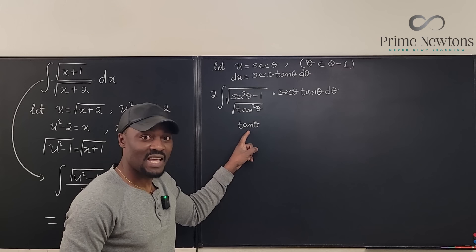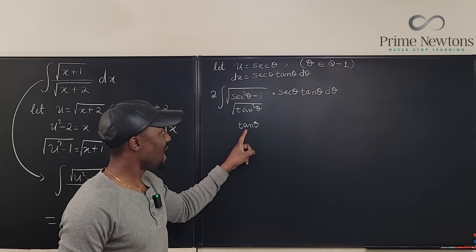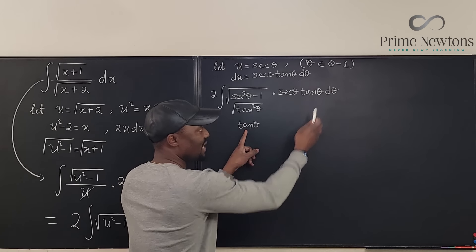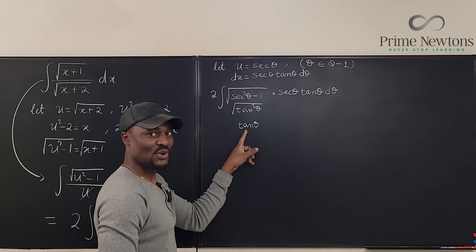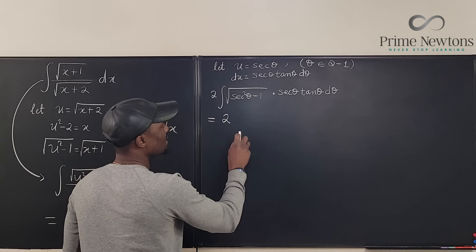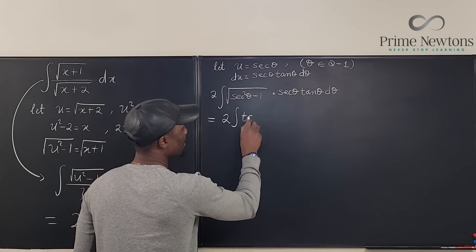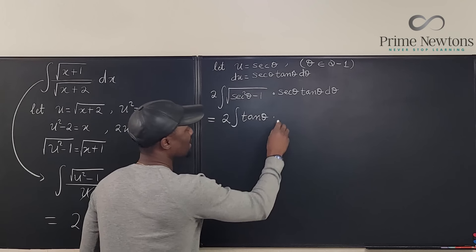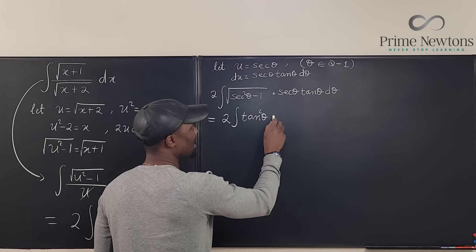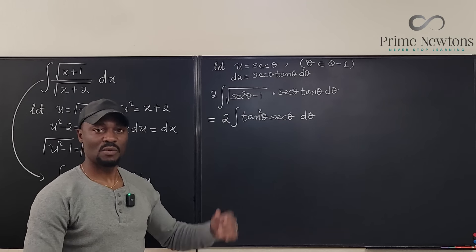So tan theta replaces the square root term, and it multiplies secant theta tan theta d theta. Rewriting, we have 2 times the integral of tan theta times secant theta tan theta d theta, which is tan squared theta times secant theta d theta.